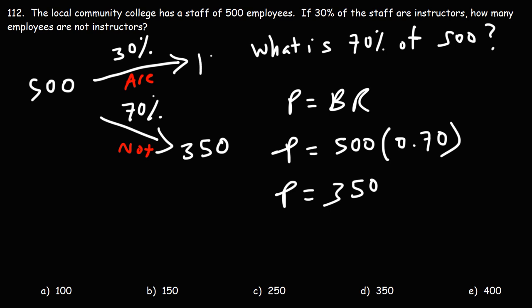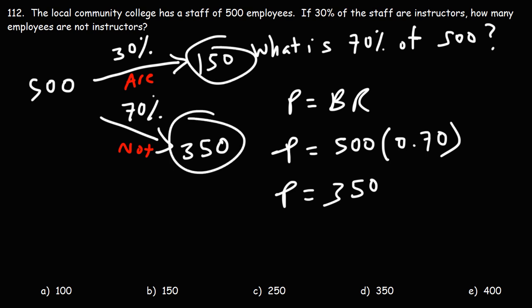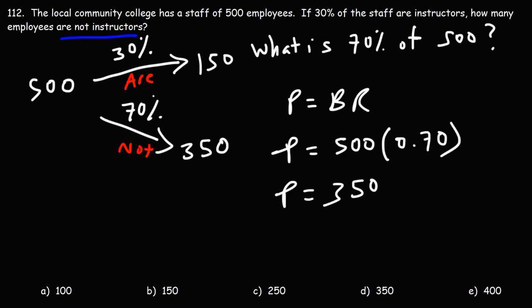That means that the other 150 are instructors, because 150 plus 350 adds up to the original 500. So we're looking for how many are not instructors — that's 350, which means answer choice D is the right answer.